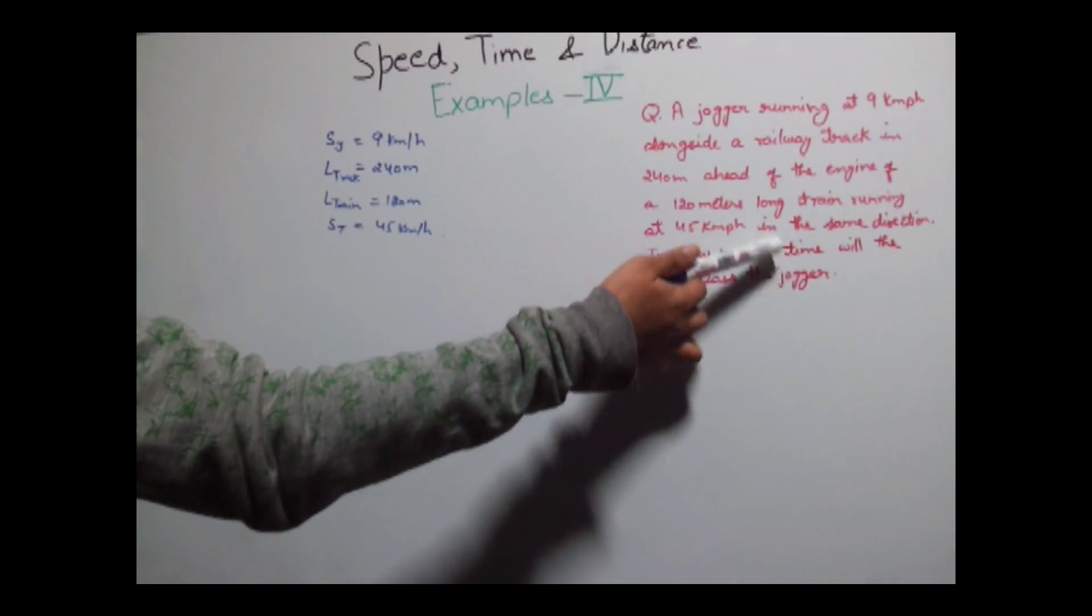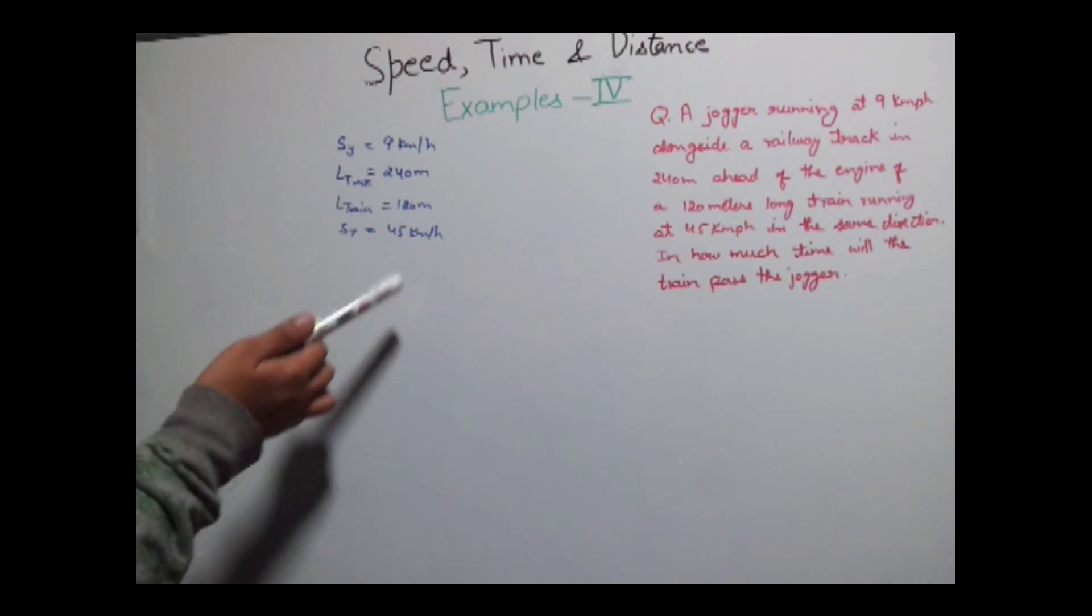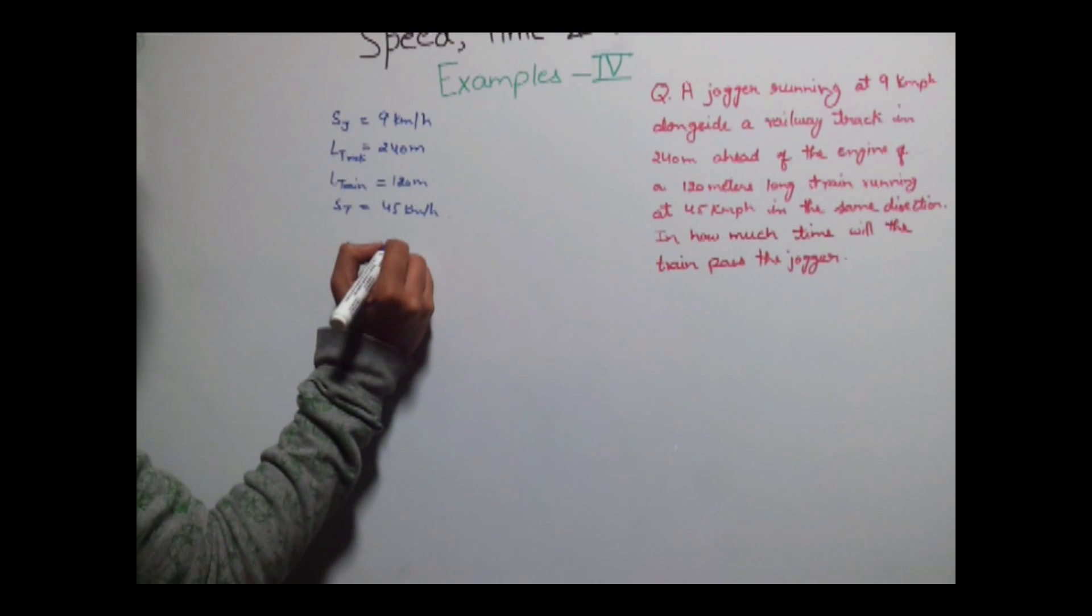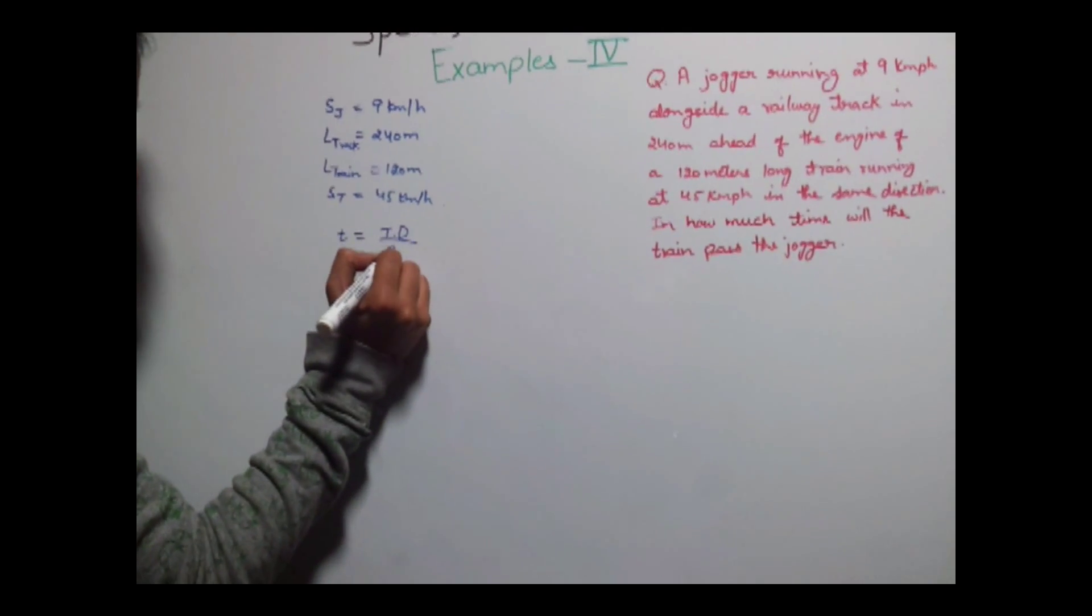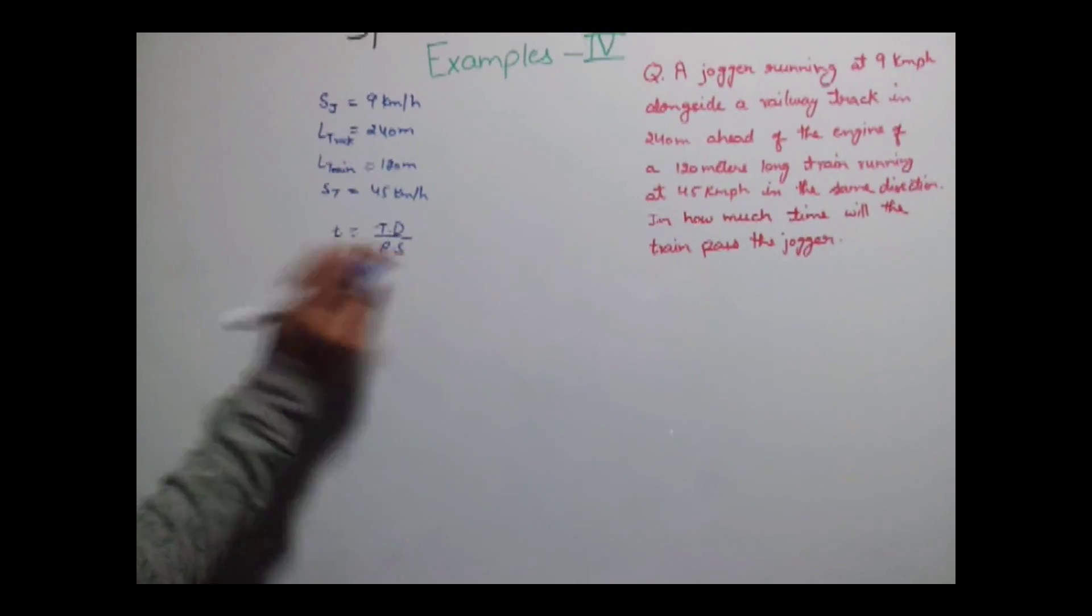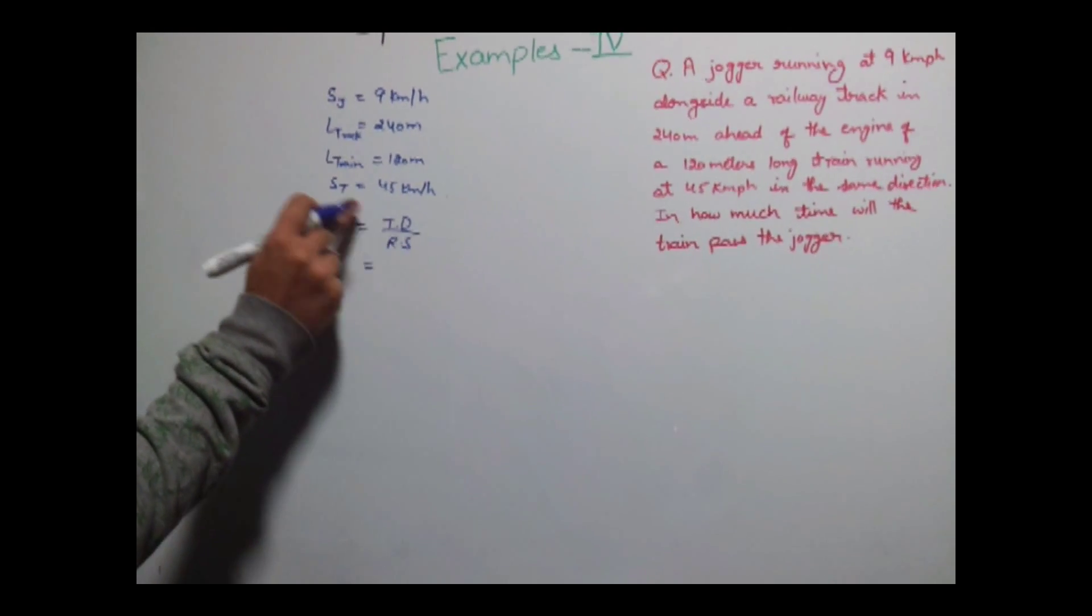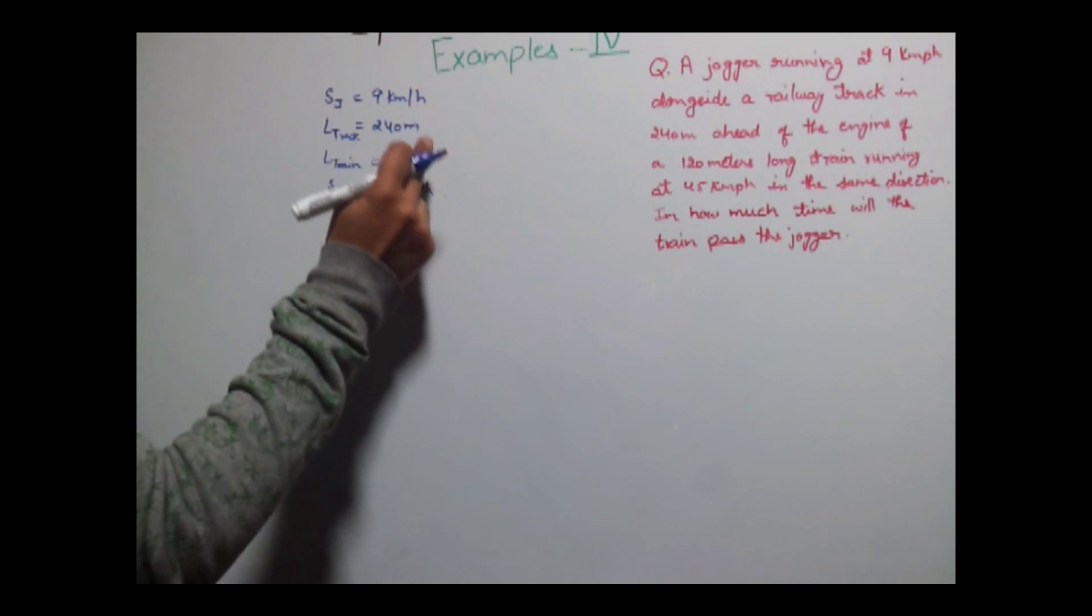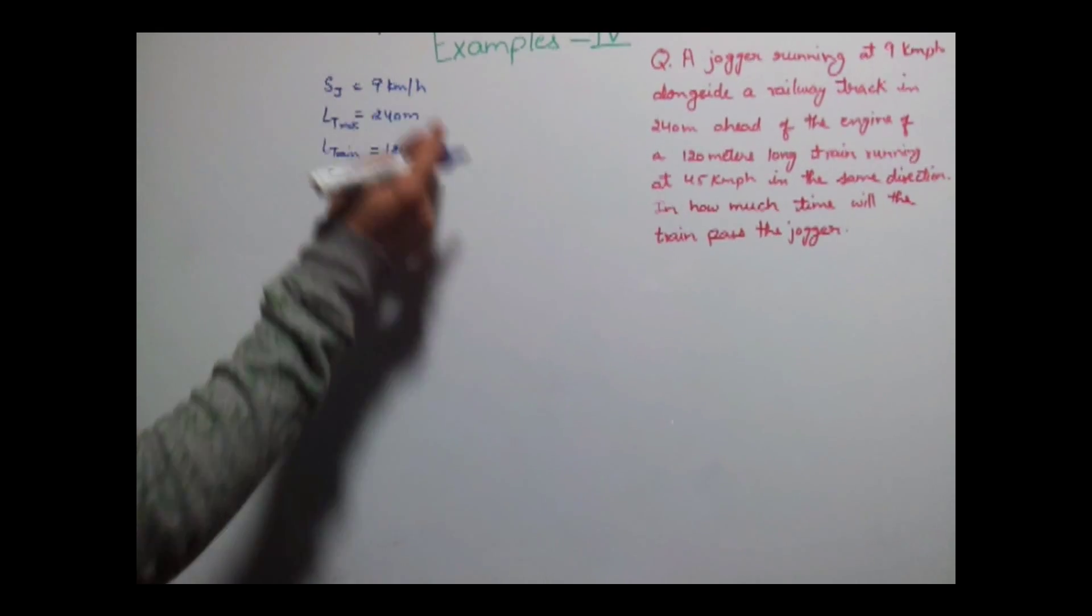We need to find out the time which the train takes to pass the jogger. So time would be equal to total distance upon relative speed. Now relative speed would be equal to speed of train minus speed of jogger which is 45 km per hour minus 9 km per hour.